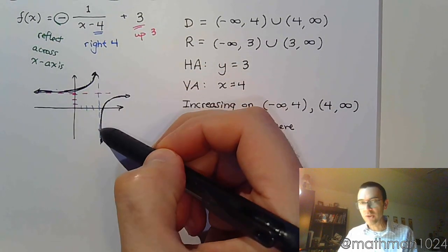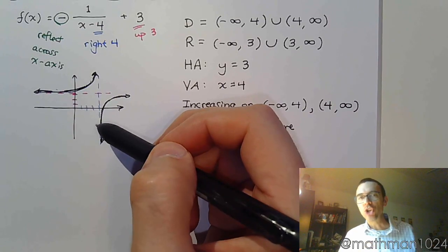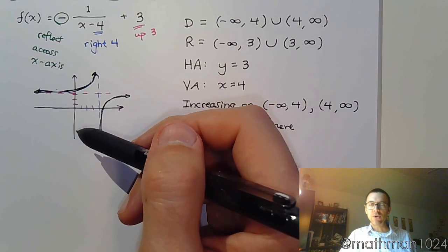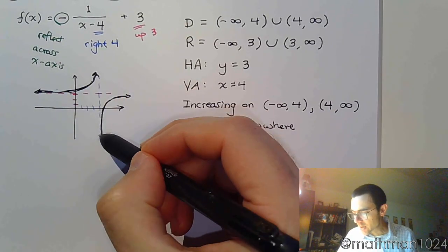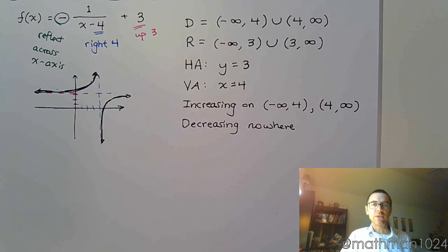You might say, but you go from here to here, that's a decrease. When there's a jump like that, that does not count as a decrease. Okay? So this guy's increasing from here to here, increasing from here to here, and no place to be decreasing.